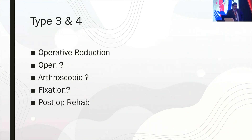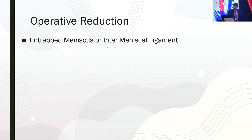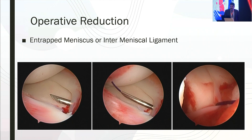For type 3 and 4 fractures the common treatment is operative, but then we have controversies about whether to treat by open reduction or arthroscopic fixation, how to fix them, and what the post-op rehabilitation regime should be. One common problem during operative reduction is the intermeniscal ligament, which can be difficult to move out of the way. You can use a hook or a whipstitch suture using the outside-in meniscus repair technique to lift it off.